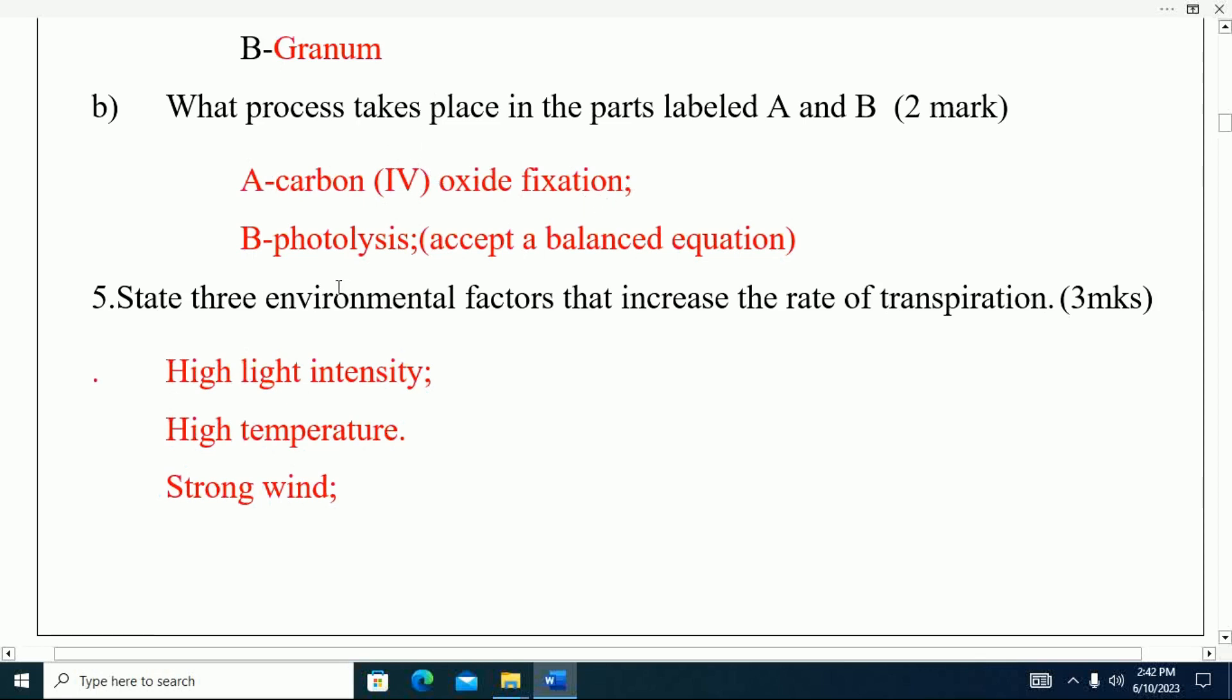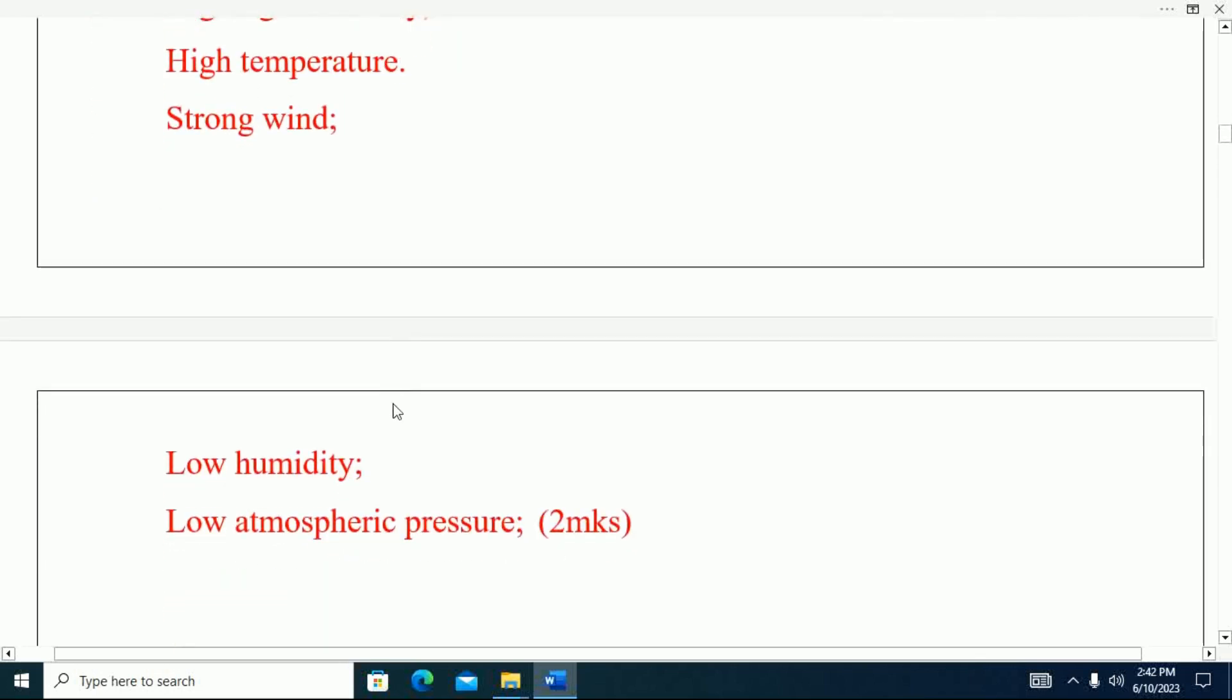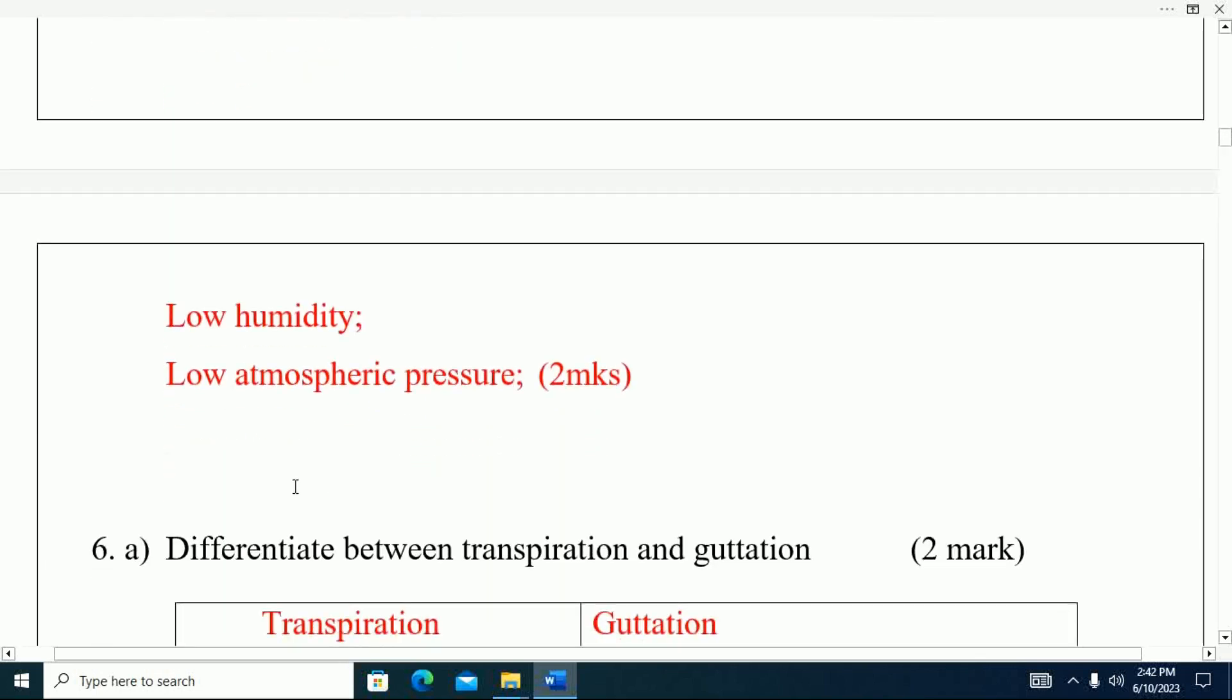Question number five: State three environmental factors that increase the rate of transpiration. We have high light intensity, number two: high temperature, number three: strong wind, number four: low humidity, number five: low atmospheric pressure.